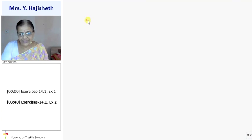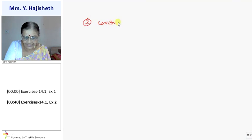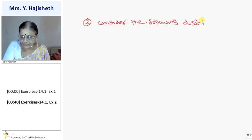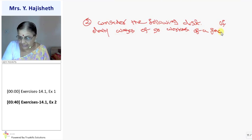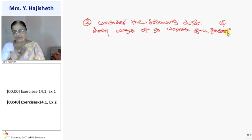Now, second sum is, consider the following distribution of daily wages of 50 workers of a factory. Daily wages of 50 workers are given in form of table. And you are asked to find out mean, average wages.